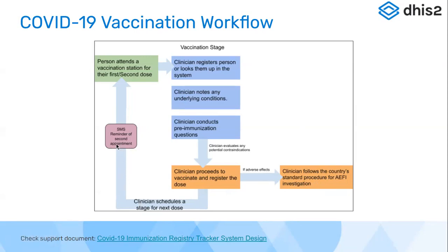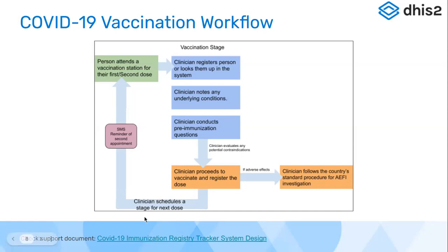SMS notifications were also configured as part of the default package, allowing reminders to be sent to the person to come for their second dose at the same health facility or vaccination site where they received their first dose. A similar system design document for the COVID-19 immunization registry is available as a resource, detailing the considerations and how the program was configured for COVID-19 vaccination.